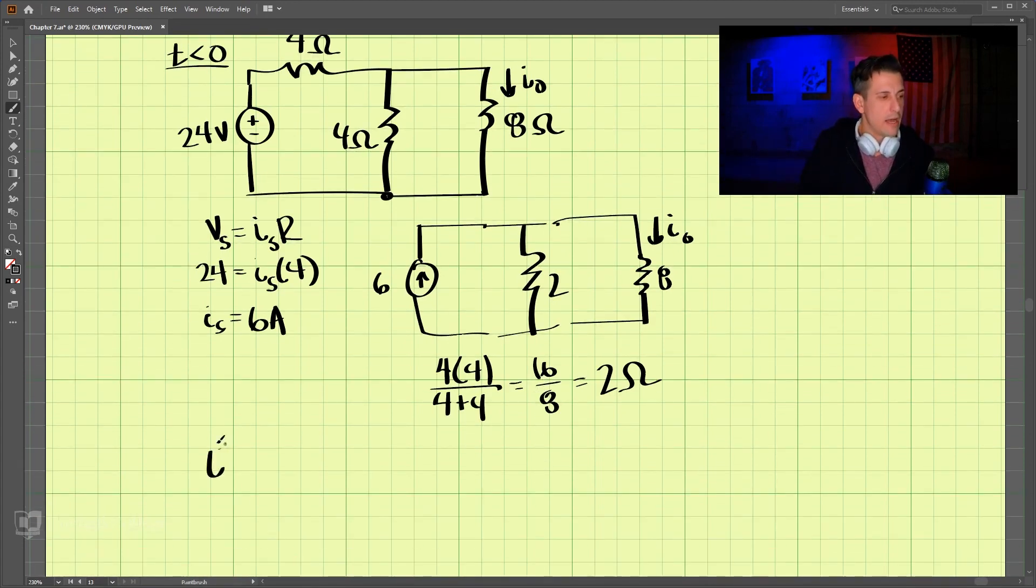So we have 4 times 4 divided by 4 plus 4. So that's 16 divided by 8, and that is 2-ohms. And we can figure out I-naught now by doing a current divider, and these are in parallel.